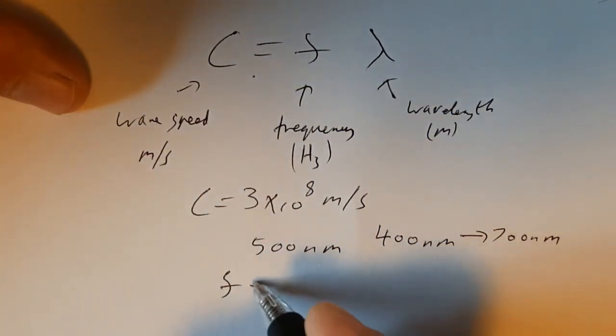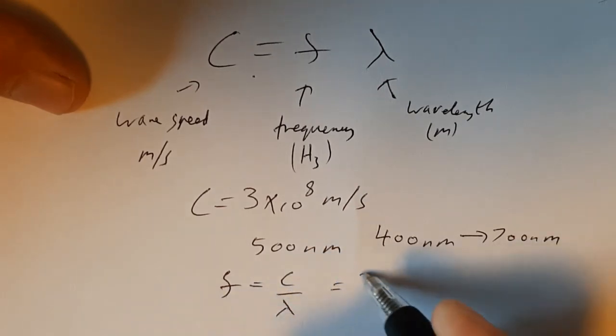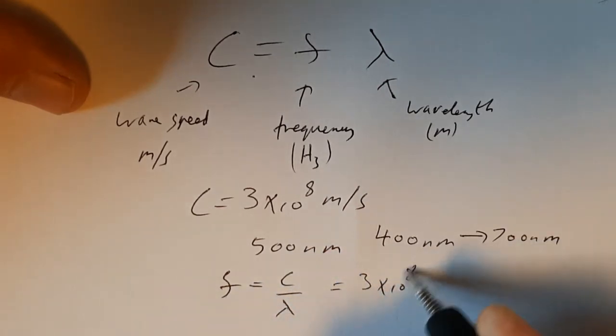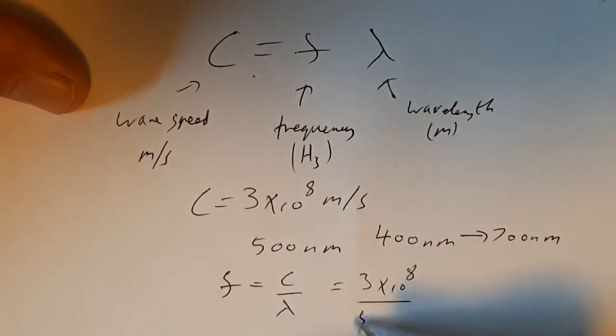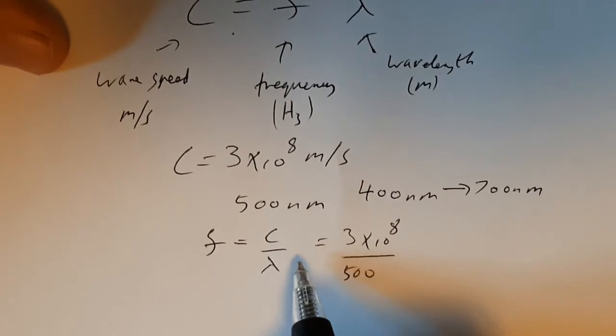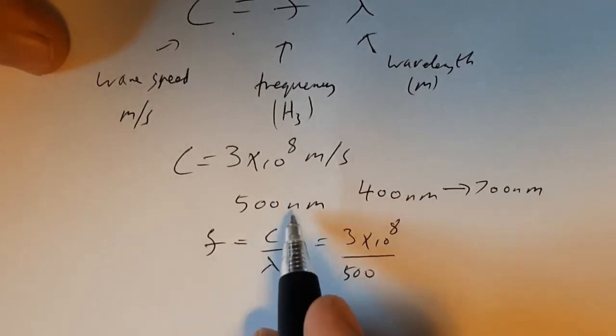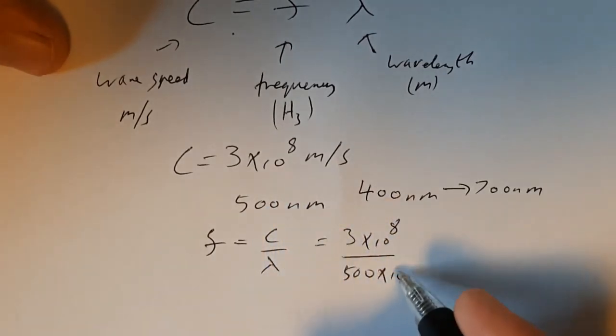So frequency is equal to C over lambda. So we've got 3 times 10 to the 8 divided by 500. Can you remember what the N is? We've had a video on this. Need to know these off by heart. Times 10 to the minus 9.